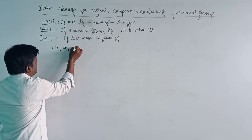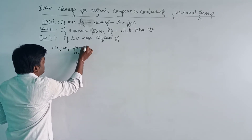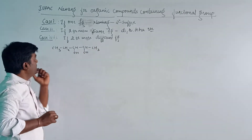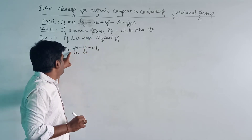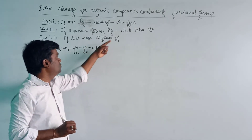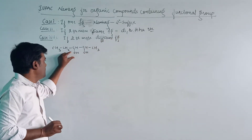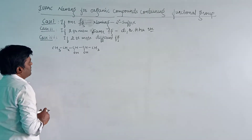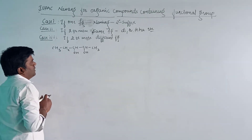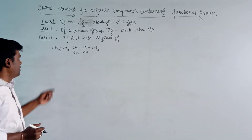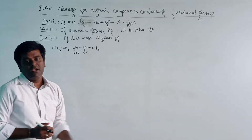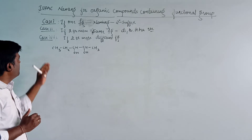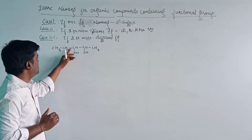Let us take an example for Case 2. Consider CH3-CHOH-CHOH-CH2-CH3. There are two OH functional groups present, so we will use di. Select the longest carbon chain: 1, 2, 3, 4, 5 — five carbon atoms. If we start numbering from the wrong side, the functional groups would get positions 3 and 4.